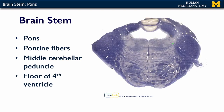If you take a cross section through the pons, again you can see the middle cerebellar peduncle and the fourth ventricle, and again all of these pontine fibers are going all over the place in here.